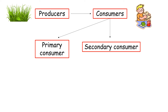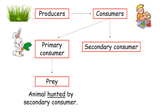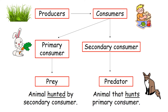As a flow chart: your producer is always where all the food starts — green plants that produce their own food. Then those green plants are eaten by a consumer, and you have two different types: the primary consumer and the secondary consumer. The primary consumer is also termed prey — it is an animal that is hunted by the secondary consumer. The predator is the animal that hunts, so prey is the animal that is hunted and the predator is the animal that hunts.